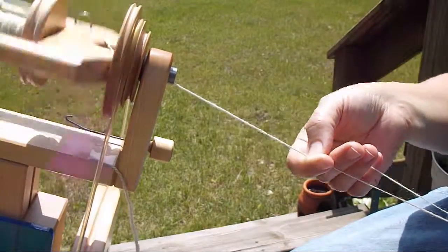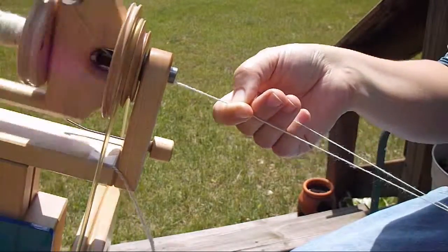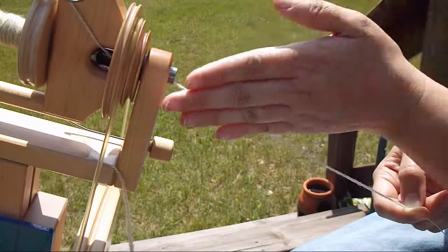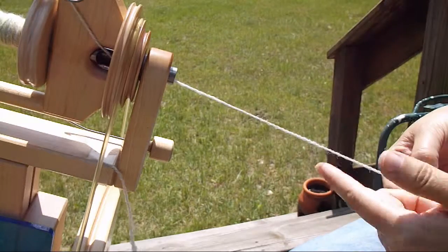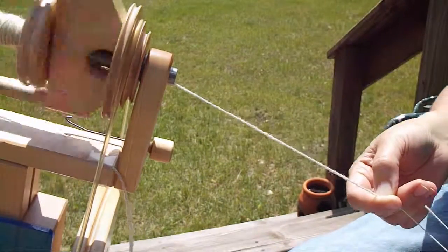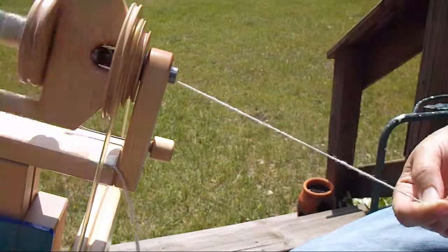So as I spin and I'm pinching and allowing the twist to enter that pinched yarn, I'm also watching the angle of twist in it. And when it gets to be about 40 degrees, I should move my hook here, when it gets to be about 40 degrees then I wind it on.